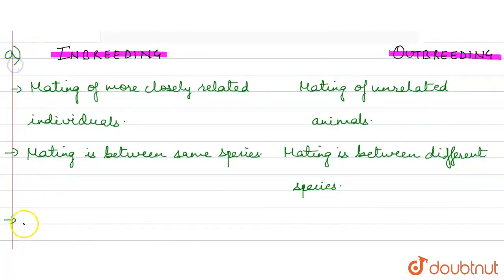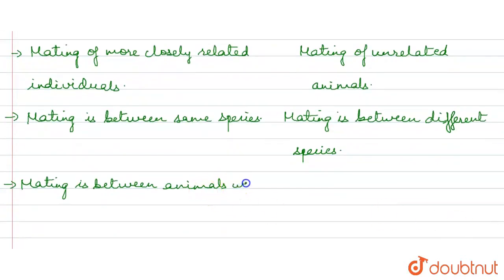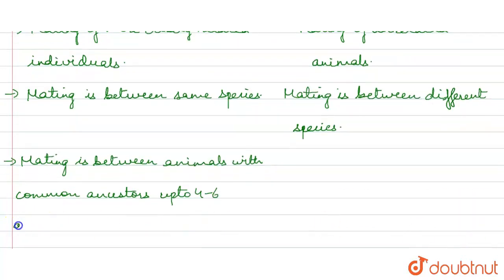Here is part A of the question. Then, mating is between animals with common ancestors up to four or six generations. Kya kehte hai ki inbreeding me kya hota hai? Hum un animals ko mate karte hai jinka same ancestors hota hai. Mating is between animals of same breed, jinka ki same breed hota hai, aur jinka common ancestor hota hai.